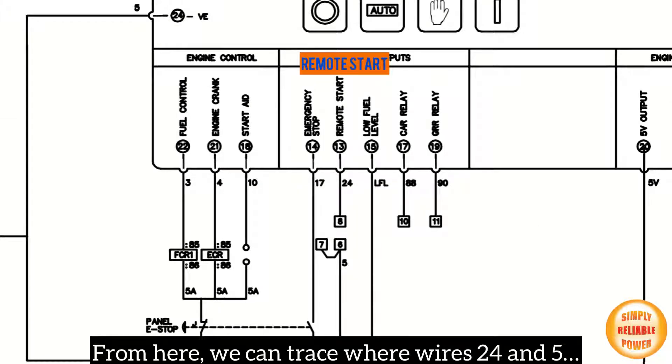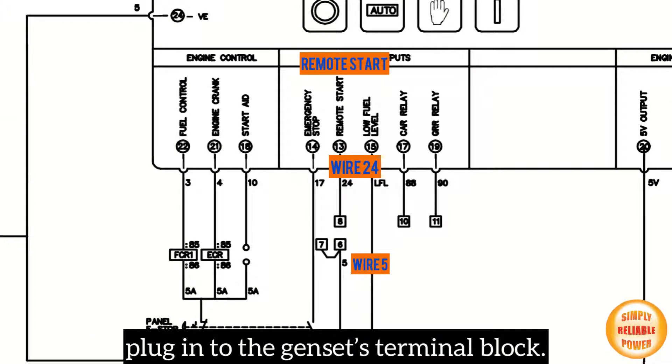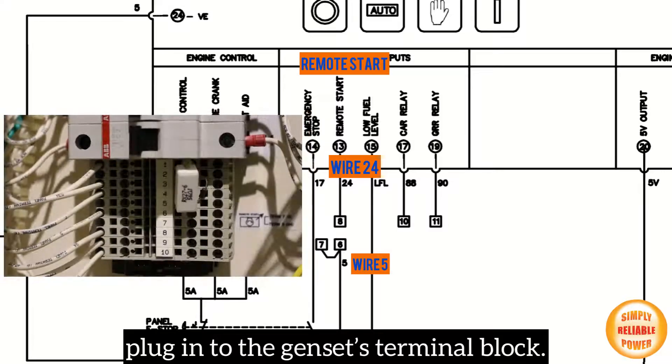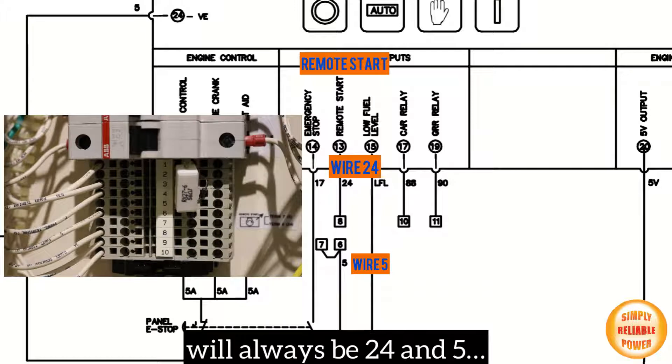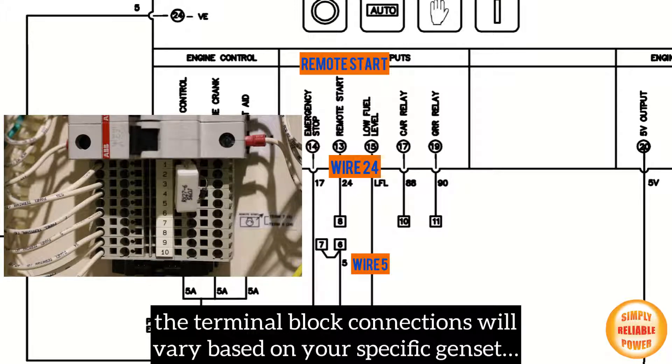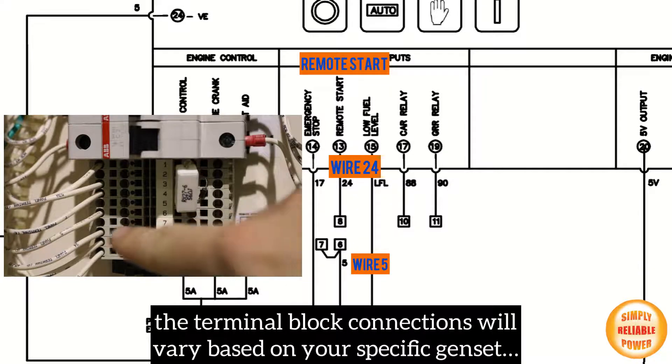From here, we can trace where wires 24 and 5 plug into the genset's terminal block. Please note that although the remote start connection wires will always be 24 and 5, the terminal block connections will vary based on your specific genset.